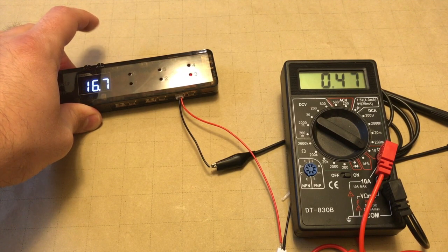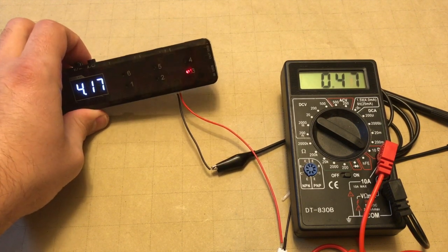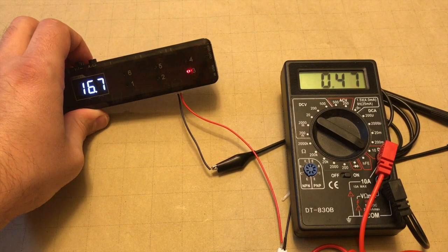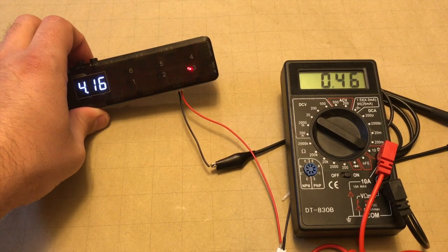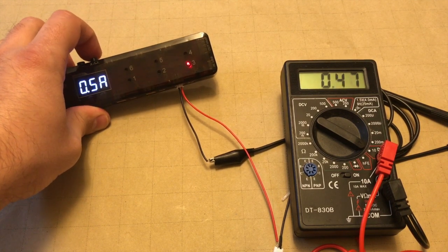Yeah, see, again, we're up half an amp, and we're right around 0.7, 0.8. But it does keep kicking out every once in a while. But as far as accuracy, the output is right around exactly what you have it set at.